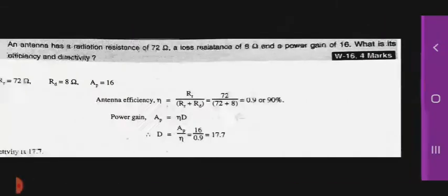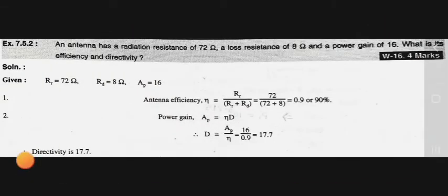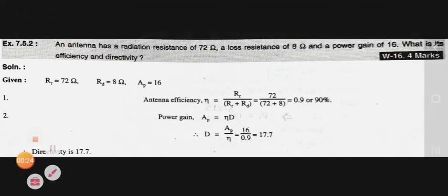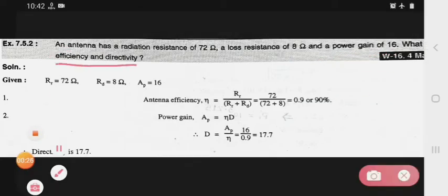So see, the first numerical is that an antenna has a radiation resistance of 72 ohm, loss resistance of 8 ohm and power gain is 16. Then what is its efficiency and directivity.